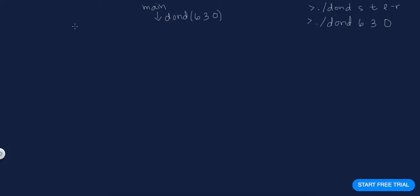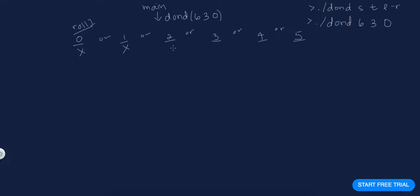We have three rolls. On the first roll I could roll a zero, one, two, three, four, or five. If I roll a zero or a one I immediately lose — because remember, 6 is the number of sides, this is how many rolls we have left, and this is the last roll.